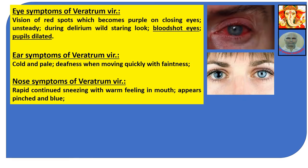Eye symptoms of Veratrum Viride: visions of red spots which become purple on closing eyes, unsteady gaze. During delirium — a staring look, bloodshot eyes, and dilated pupils. Bloodshot eyes show redness of the sclera. Dilated pupils are larger than normal pupils.